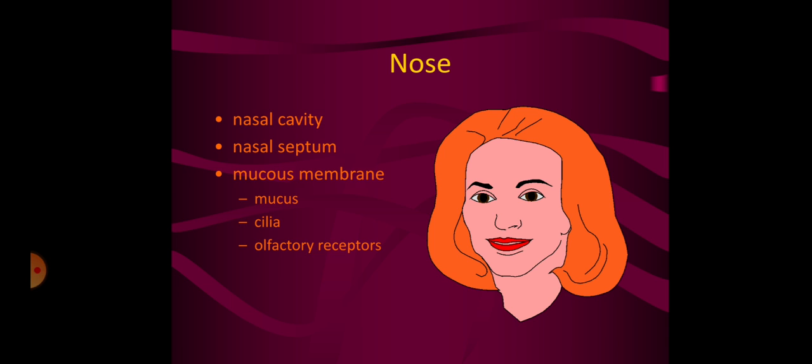Then, from the nasal cavity, the next structure in the respiratory system is the pharynx. The pharynx is actually known as the nasopharynx which contains adenoids or pharyngeal tonsils.